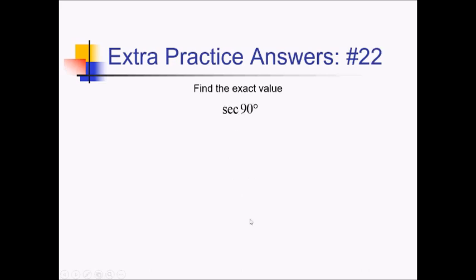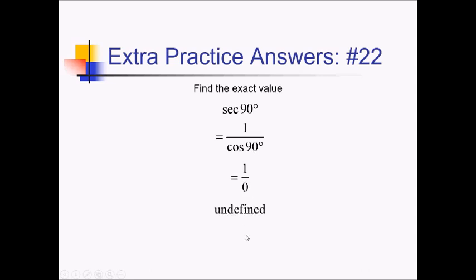For this problem, we're trying to figure out secant of 90. That's really 1 over cosine of 90. This is a quadrantal angle, so there's no point in trying to get a reference angle — you just have to know where you are on the unit circle. 90 degrees is the top of the unit circle; cosine is talking about the x value up there, which is 0 because you're on the y-axis. So this is really 1 over 0, which is undefined.